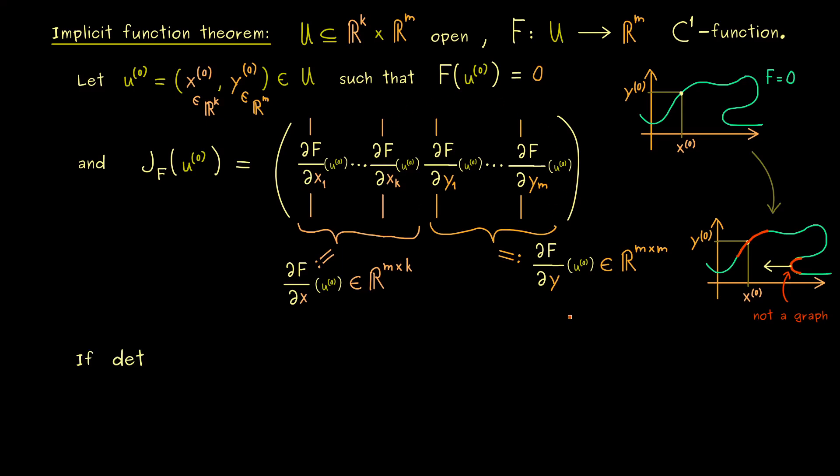So in general, I can already tell you what we want. We want that this matrix here is invertible. And there you see, in the case that m is equal to 1, it means that the partial derivative with respect to y is non-zero. However, in general, we have a whole matrix. Hence, there we have to say that the determinant of this matrix is not zero. And then we have excluded this problematic case. And we can describe our local graph.